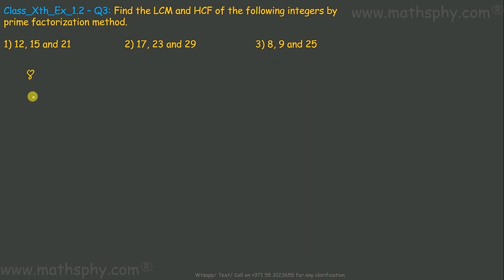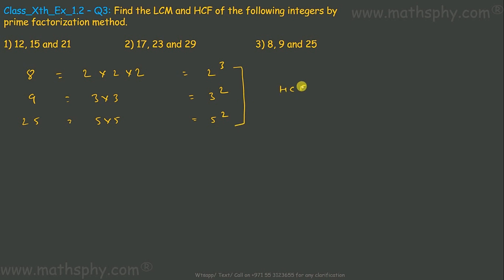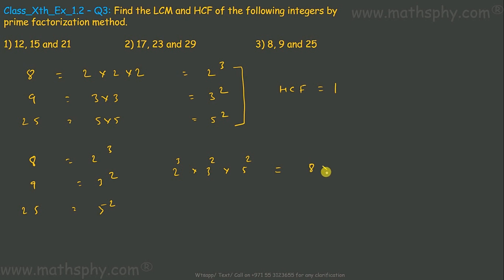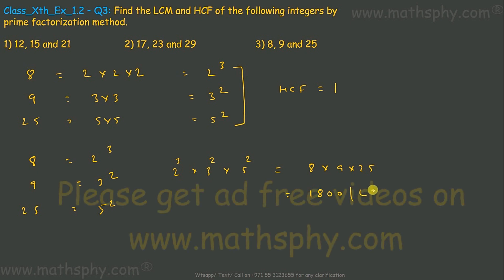Now for 8, 9, and 25: 8 = 2 × 2 × 2 = 2³, 9 = 3 × 3 = 3², and 25 = 5 × 5 = 5². There is nothing common among them, so HCF = 1. For LCM, we take all prime factors: 2, 3, and 5, with highest powers 3, 2, and 2 respectively. So LCM = 2³ × 3² × 5² = 8 × 9 × 25 = 1800.